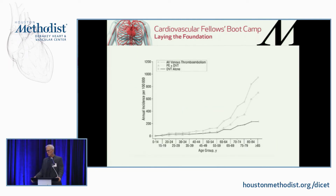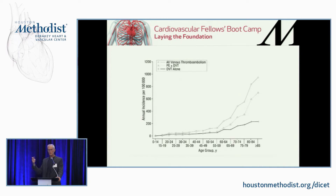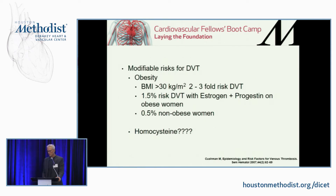Age is a big risk factor. Once you get over 40, your risk factor for DVT is one of the bigger ones. You've got cancer, immobility, other procoagulant states — but age is a really significant risk factor.